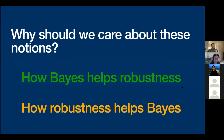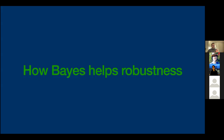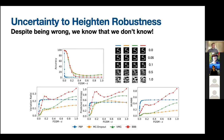Moving to why we should care about adversarial robustness for Bayesian neural networks, I'll break it into two directions: how being Bayesian improves robustness, and how robustness helps Bayes. First, uncertainty can heighten robustness by rejecting adversarial examples — simply saying 'we don't know.' In a self-driving car where an adversarial example is injected, we could turn over control to the user because we know we don't know what's ahead of us on the road.